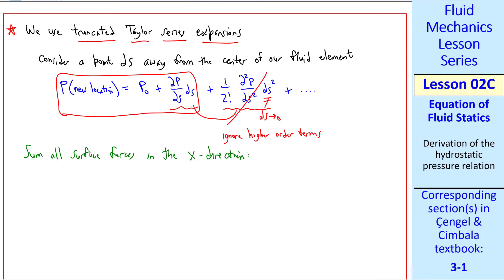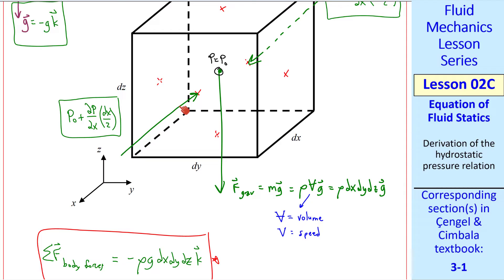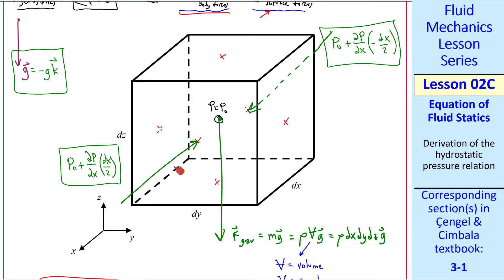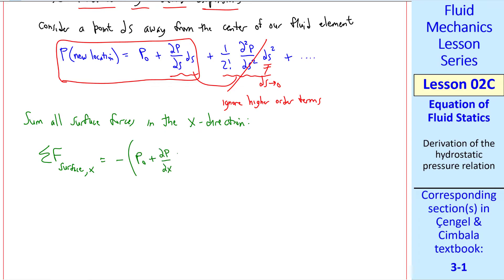Now let's add those up. We'll sum up all the surface forces in the x direction. I'll call this sigma f surface comma x. Careful with our signs. On the front face, the pressure is acting in the negative x direction. So we have to put in a negative sign. While on the back face, the pressure is acting in the positive x direction. So we write it this way. For the front face, negative p0 plus del p del x dx over 2. That's the pressure. The area of that face is dy dz. Force is pressure times area. So this is the force on the front face.